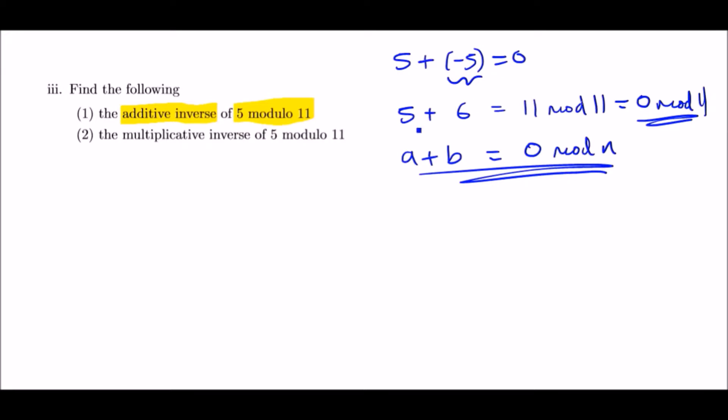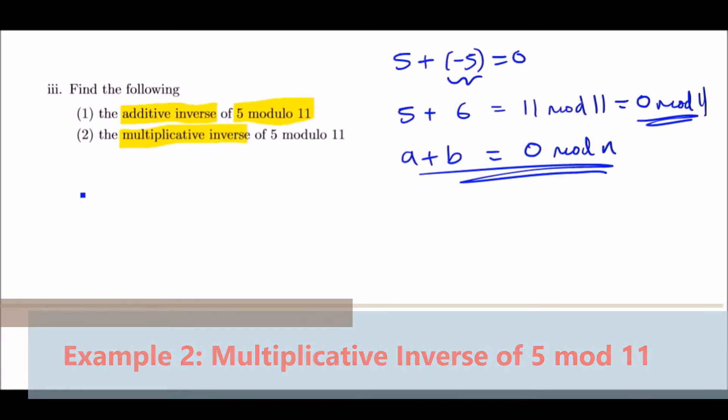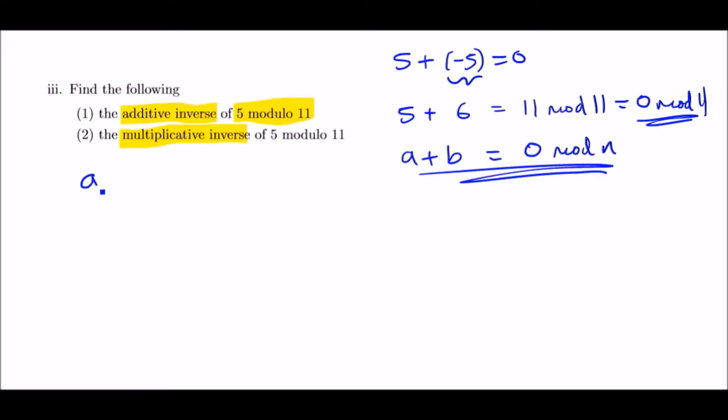Now for the multiplicative inverse, it's a bit different. The general property states that we need to have some term a, which you can take as 5, times some term x mod n, and this should give us 1 mod n.